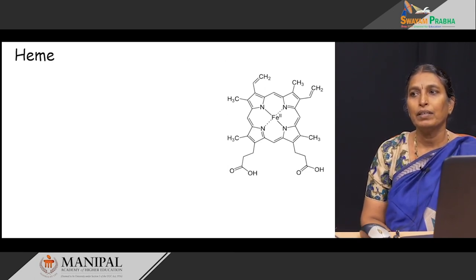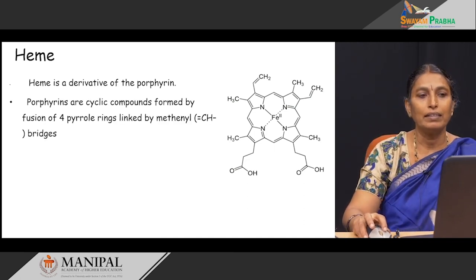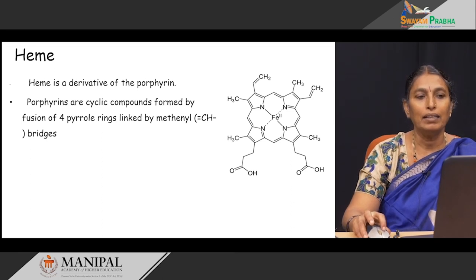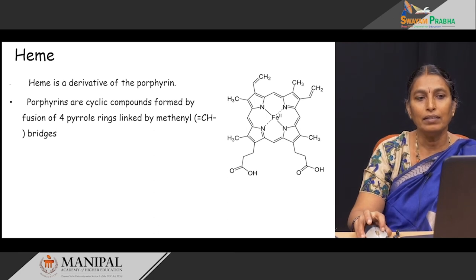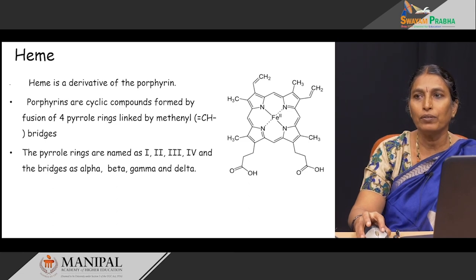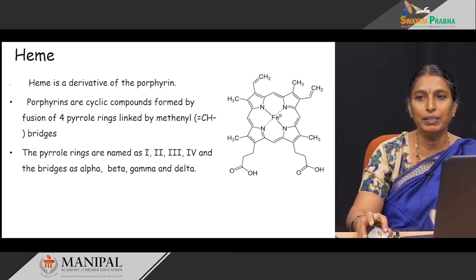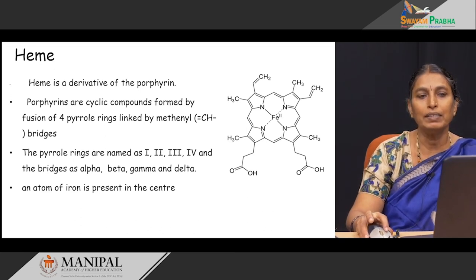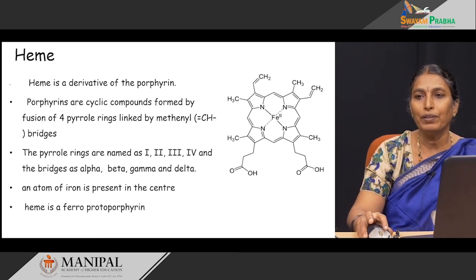What is heme? Heme is a porphyrin ring. These porphyrin rings are cyclic compounds formed by fusion of 4 pyrrole rings linked by methenyl bridges. These are the 4 pyrrole rings: ring A, ring B, ring C, and ring D — also named pyrrole ring 1, 2, 3, and 4. The methylene bridges are alpha, beta, gamma, and delta. An atom of iron is present in the centre as Fe²⁺. So, together this is called ferro-protoporphyrin. Heme is a ferro-protoporphyrin.